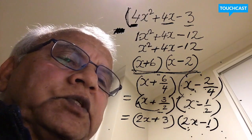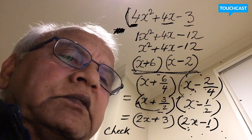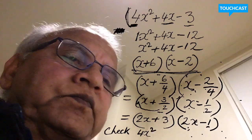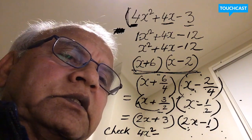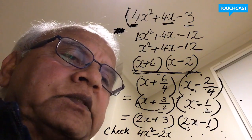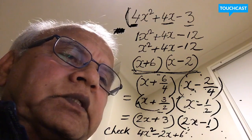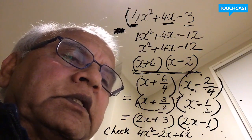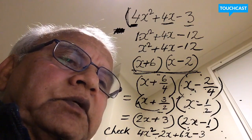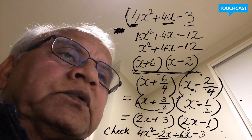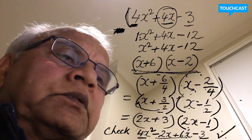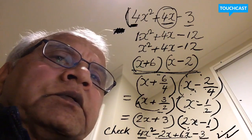Let me check if I got the right answer. 2x times 2x gives 4x². 2x times -1 gives -2x, and 3 times 2x gives 6x. Then 3 times -1 gives -3. If you simplify that, you get the middle term. All looks good. I'll stop there.